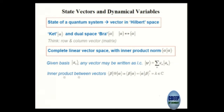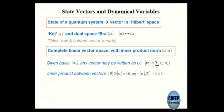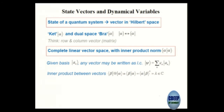The inner product between vectors is defined so that if you take vector beta times vector alpha, that will be the complex conjugate of vector alpha times vector beta. One way in which these vectors differ from vectors of 3D real space is that the elements are allowed to be complex numbers. This is very important in quantum mechanics — you allow them to be complex numbers.